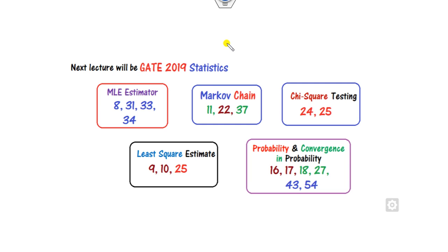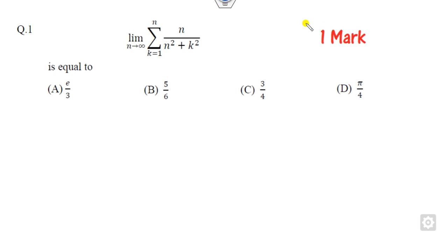After completing these two questions, we will try to cover some more questions on MLE estimators, Markov chain, chi-square, least-square, and convergence in probability, all asked in GATE 2019. We will discuss 25 out of 55 questions, more than 50%, so you can prepare for GATE 2022 and onwards in a simple manner.